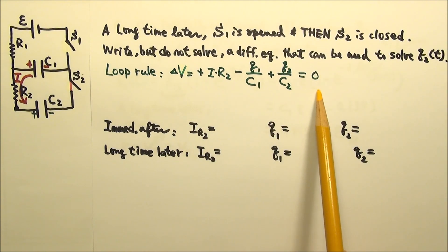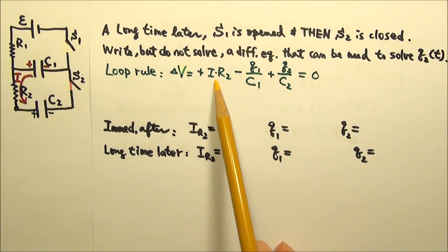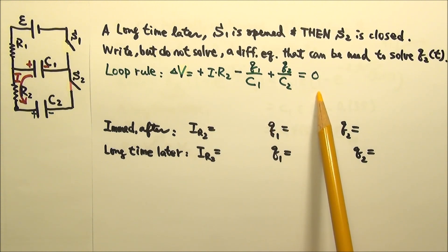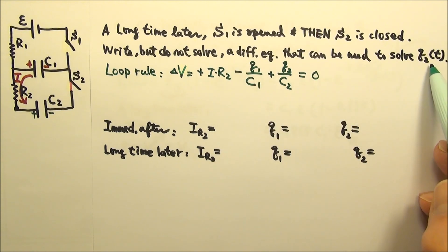Now we have one equation, but we have three unknowns: I, Q1, and Q2. To reduce the three unknowns to one unknown for our one equation, we have to replace two of those in terms of the third. Since we want an equation for Q2, I'm going to replace I with the dQ2 dt.